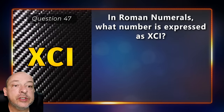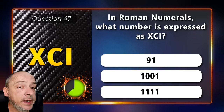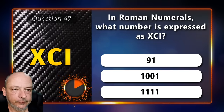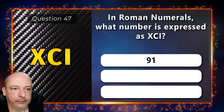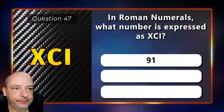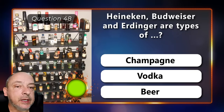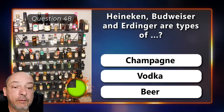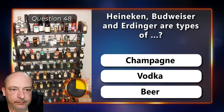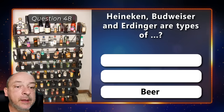In Roman numerals, what number is expressed as XCI — 91, 1001, or 1111? The answer is 91. Heineken, Budweiser, and Oedinger are types of champagne, vodka, or beer? They are types of beer.